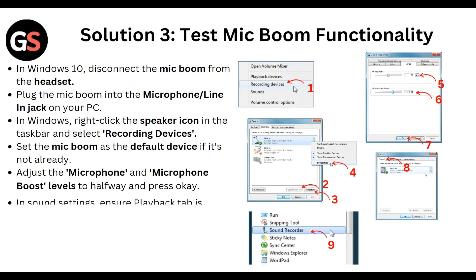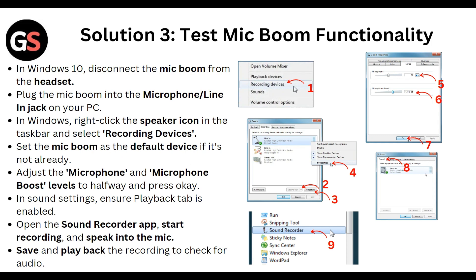Next, test the mic boom functionality in Windows 10. Disconnect the mic boom from the headset and plug it into the microphone line-in jack on your PC. Right-click the speaker icon in the taskbar and select recording devices. Set the mic boom as the default device if it is not already, then adjust the microphone and microphone boost levels to halfway and press OK.